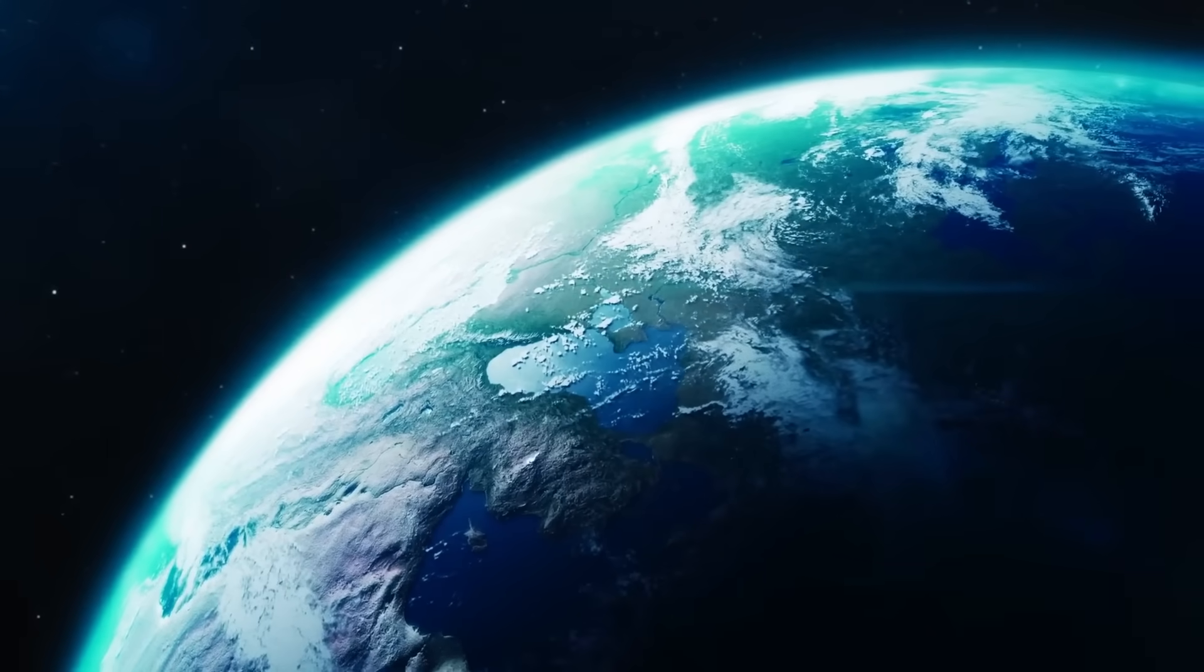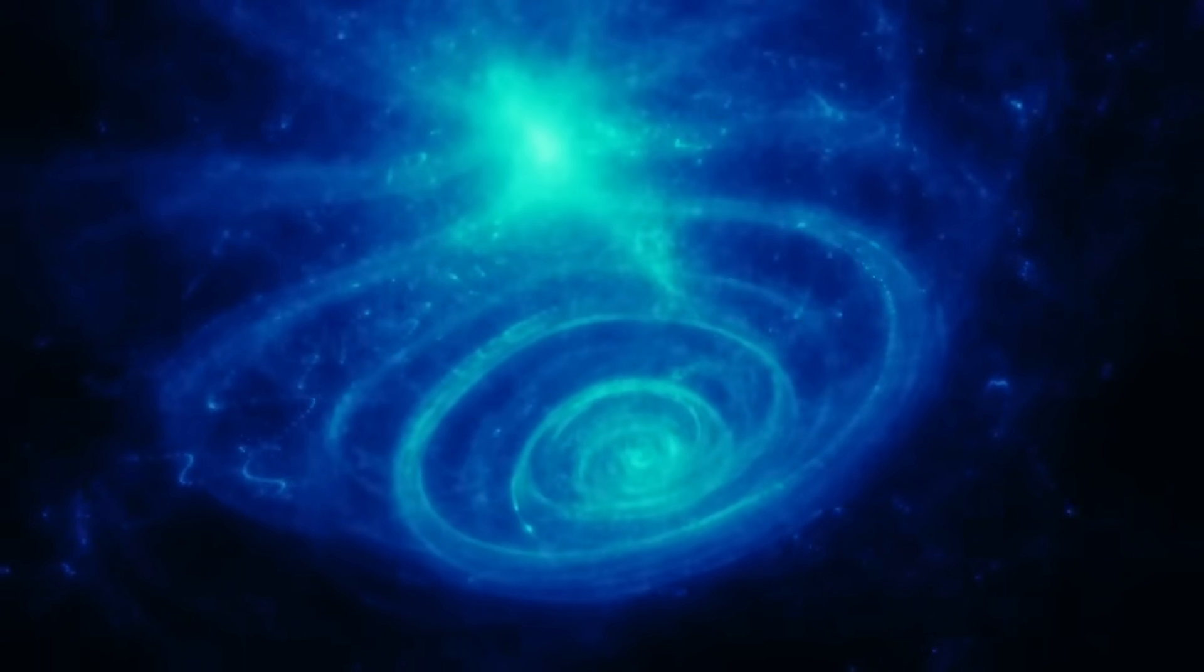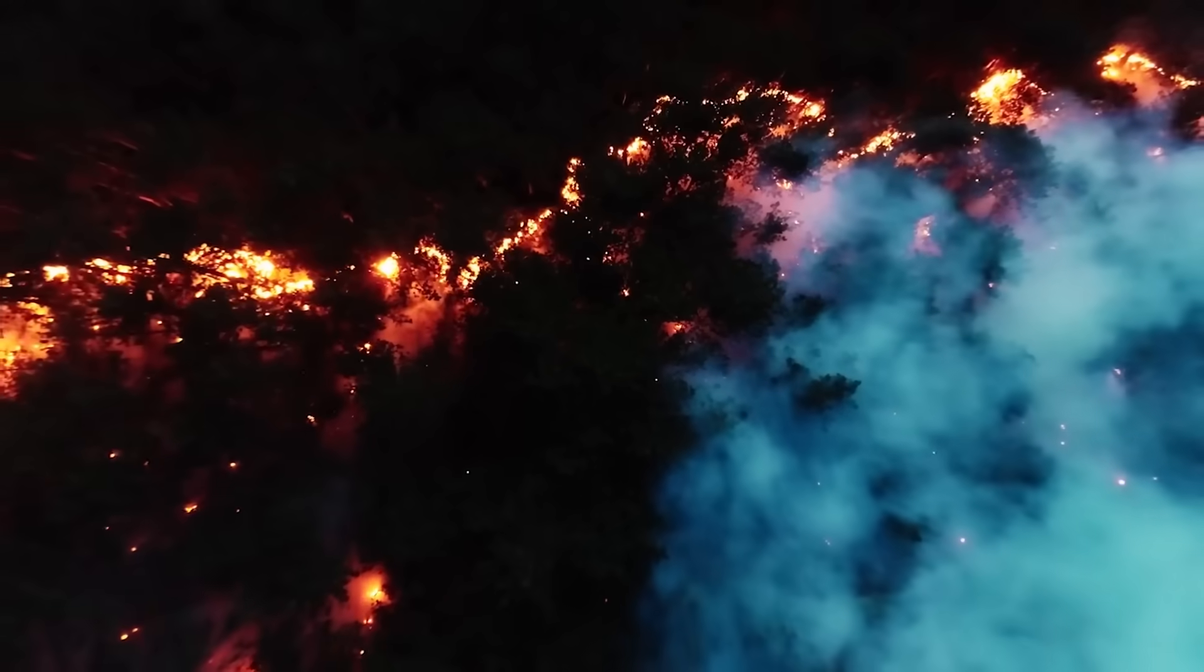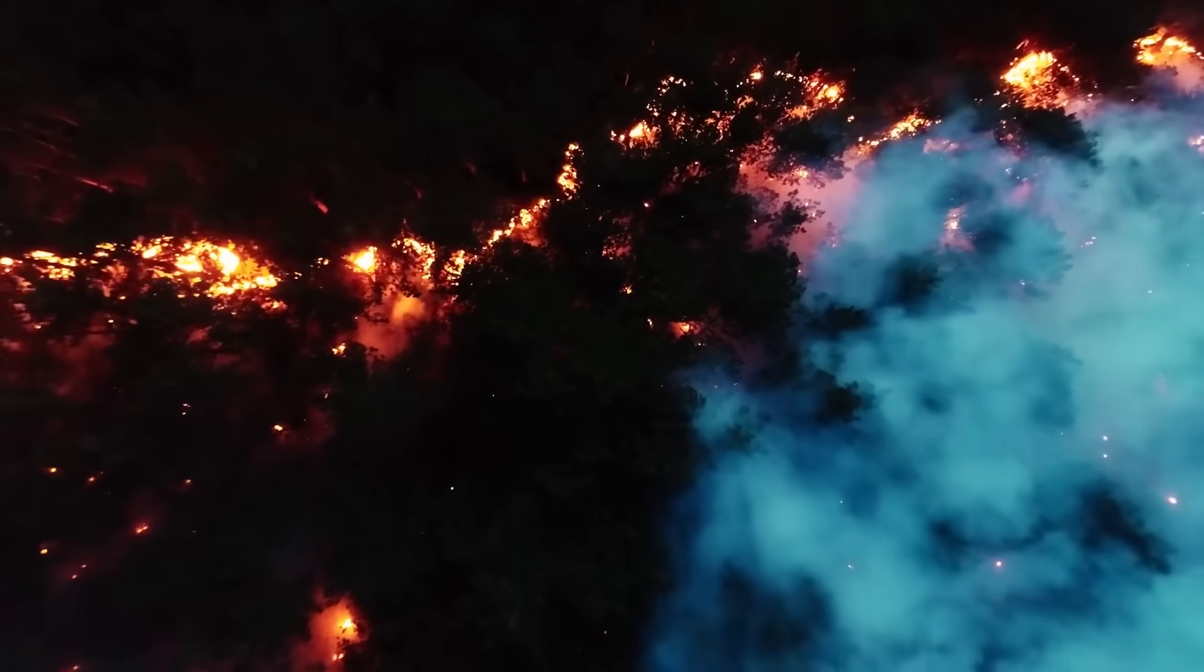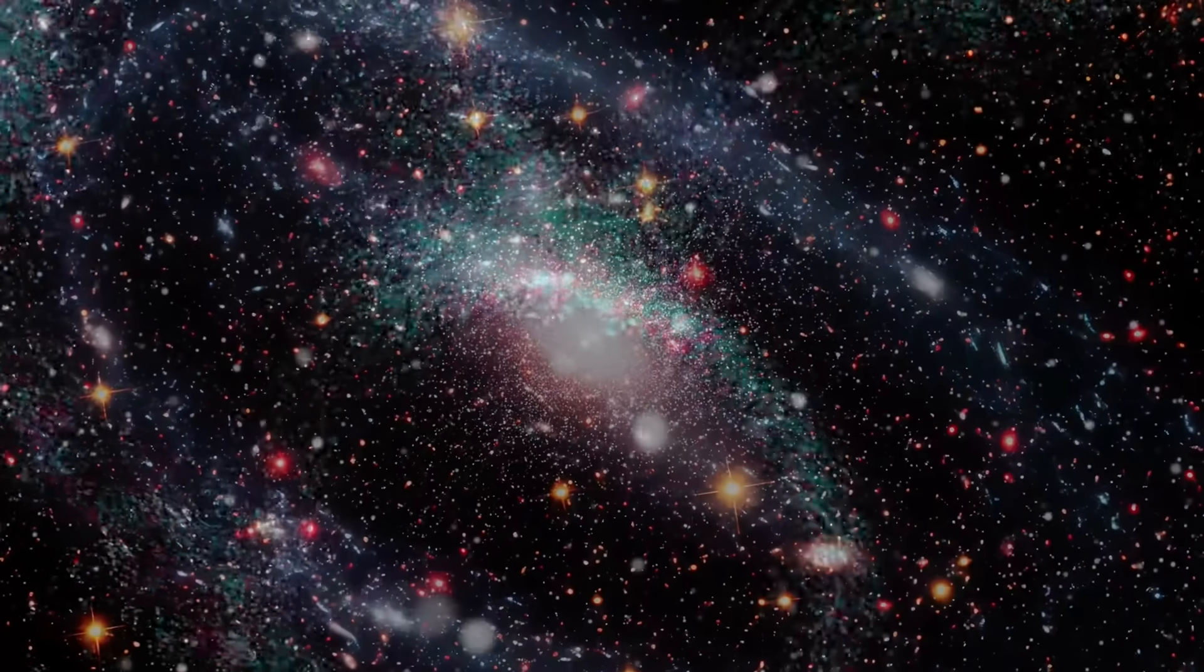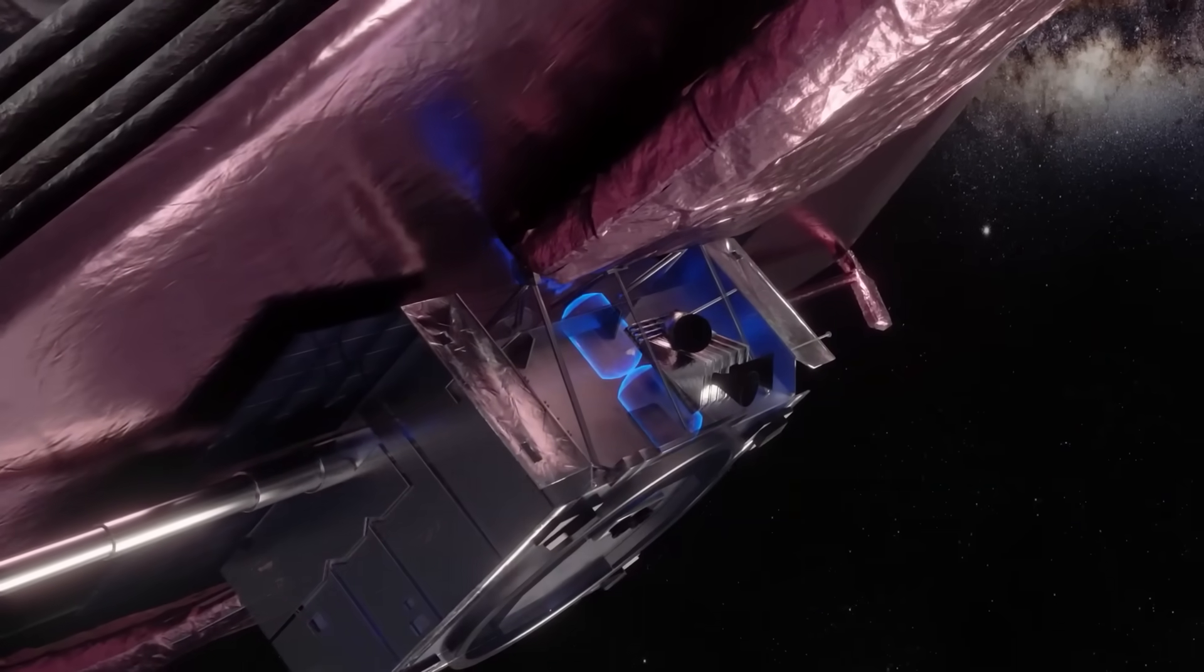More frightening than what it resembled was where it was located. The coordinates matched a cold spot in the cosmic microwave background, an area long thought to be a statistical anomaly, devoid of galaxies and stars. But now, it looked more like a lock, a vault, a geometric construct encoded into the fabric of the universe itself. And if it's a vault, what's inside it?